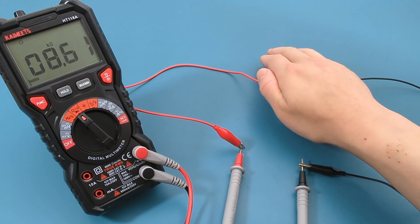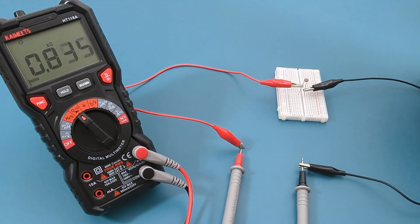When I cover the LDR with my hand, the resistance increases. When I move my hand, the resistance decreases.